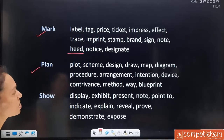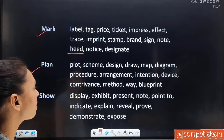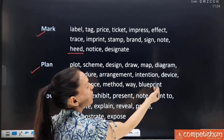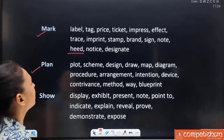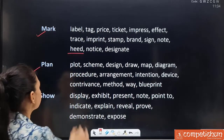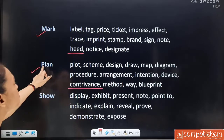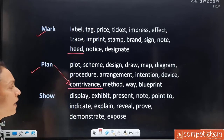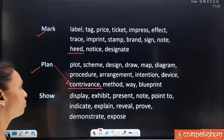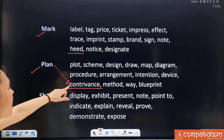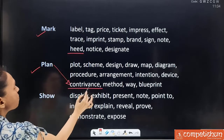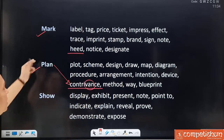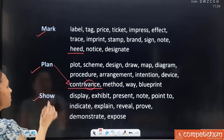Synonyms for 'plan': plot, scheme, design, draw, map, diagram, procedure, arrangement, intention, device, contrivance (a new, longer word for plan — note the rhyme: plan/van, contrivance has 'van'), method, way and blueprint. 'Contrivance' is a less-known multi-syllable synonym to pay attention to.